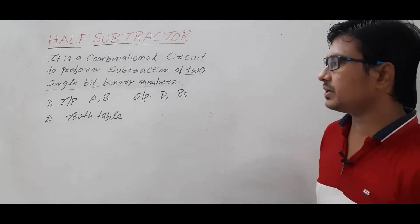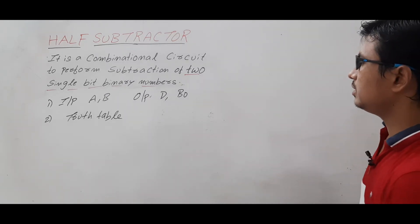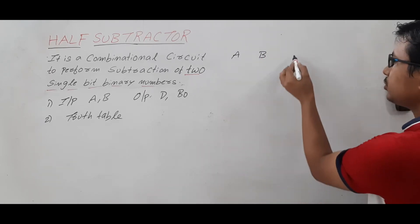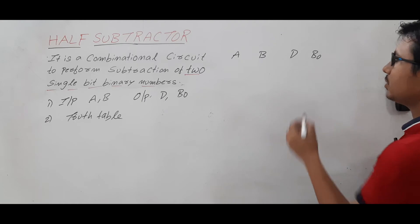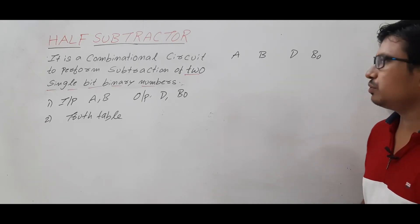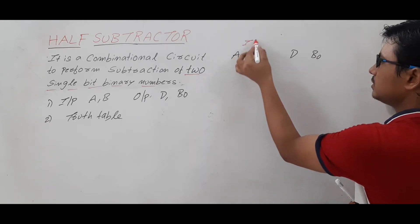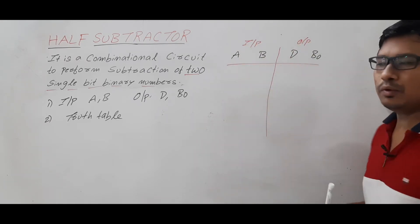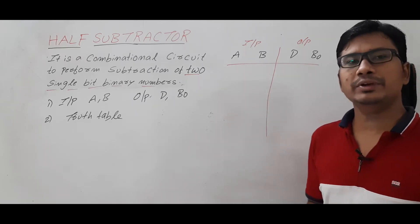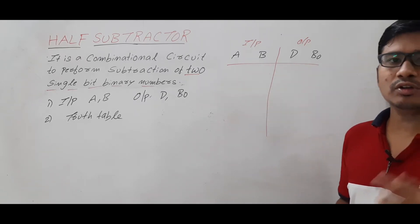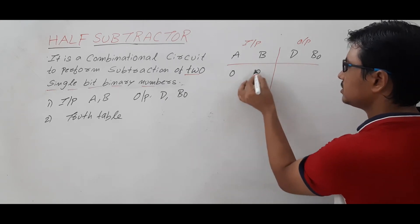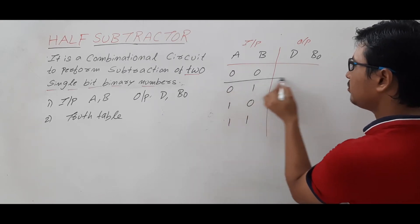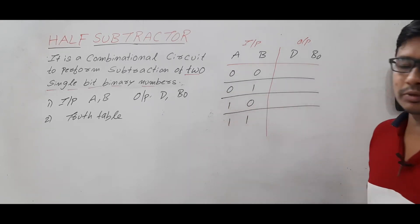So let me find the truth table. A and B are the two inputs and the outputs are difference and borrow (BO). We have two inputs and two outputs. If we have two inputs and they are binary numbers, four combinations are possible: 00, 01, 10, and 11.